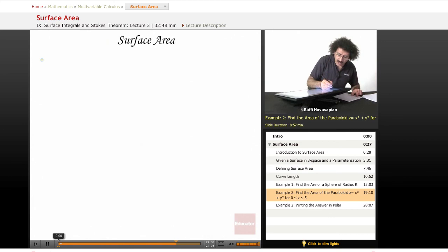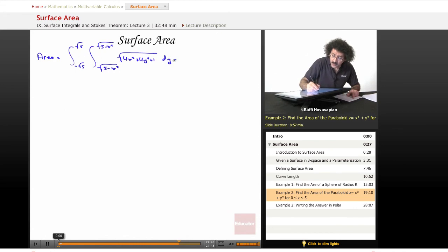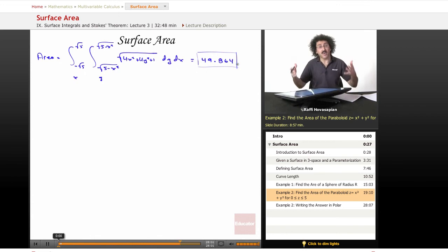So my area integral ends up being as follows. Area equals the integral from minus radical 5 to radical 5. The integral from minus radical 5 minus x squared to radical 5 minus x squared. And of course, I have my function, the norm of the cross product, which was 4x squared plus 4y squared plus 1 under the radical dy dx. Because this is y and this is x. So I'm integrating that first. When I put this into my mathematical software, I get the number 49.864. There we go. That's the surface area of the paraboloid that has a height of 5.